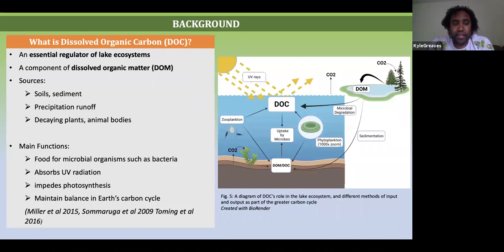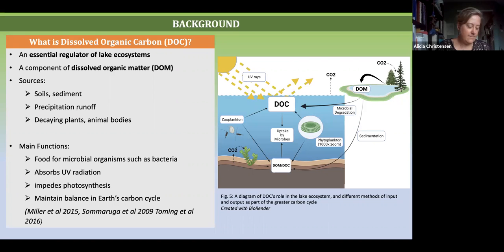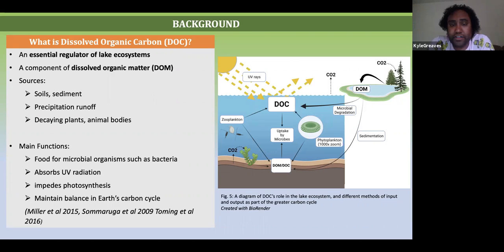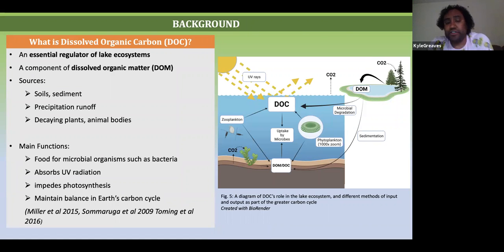Another factor that we are comparing chlorophyll A against is dissolved organic carbon, also known as DOC, which is a component of dissolved organic matter. It comes from soils, from runoff, and from decaying plants and animal bodies. As you can see in the figure to your right, DOM and DOC is also a part of Earth's carbon cycle and plays many roles within the lake ecosystem. DOC is a part of total dissolved solids. It helps to reflect UV radiation. It can impede photosynthesis, but it also provides substrate and food for microbes such as bacteria. As trees shed their leaves and plants die, they form sediment at the bottom or float within the water and are then degraded into dissolved organic carbon.